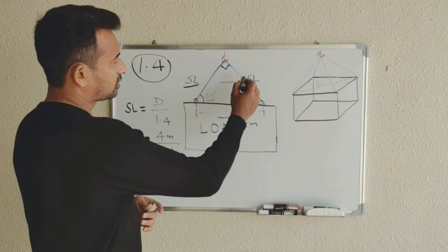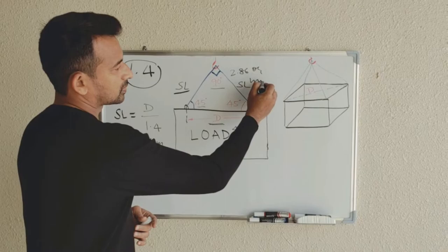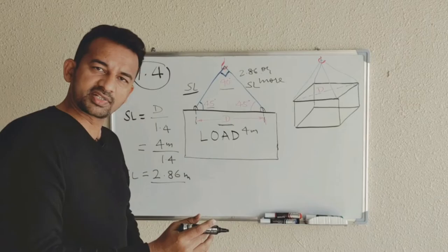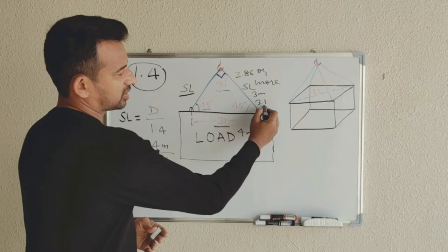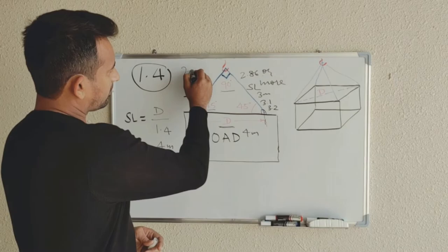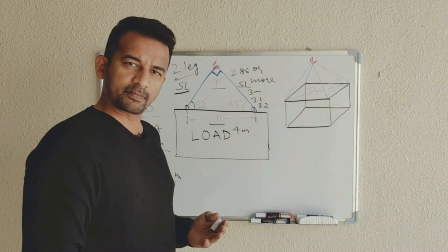It means if you maintain your sling length 2.86 or more, then you're making sure your sling angle is not exceeding the recommended sling angle. So anywhere 3 meters, 3.1, 3.2, all will do. This is for two leg.